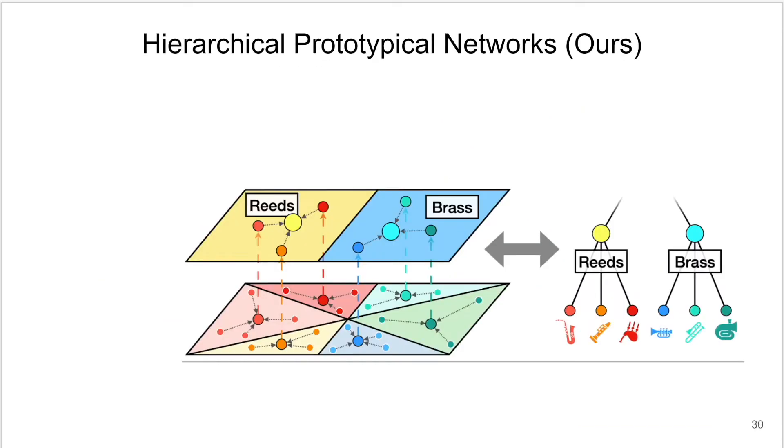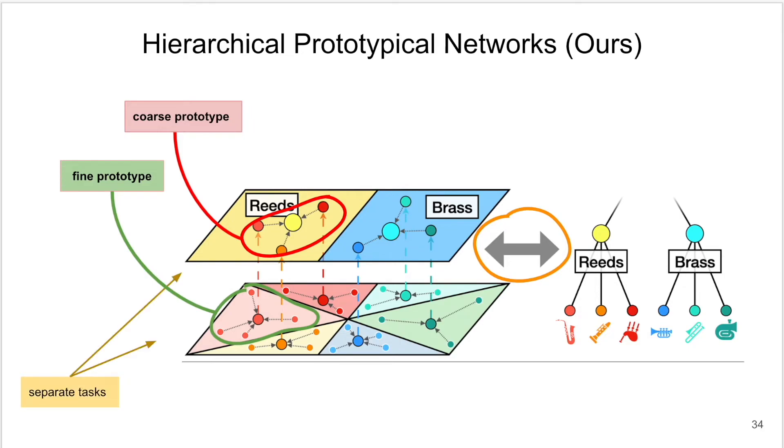We extend upon prototypical networks by incorporating a hierarchical label structure designed to mimic a musical instrument hierarchy. We achieve this by computing a set of prototypes from the support set and aggregating these prototypes into coarse-grained prototypes using the same averaging method. This represents a multitask learning scenario where each level of the hierarchy is treated as a separate classification task.